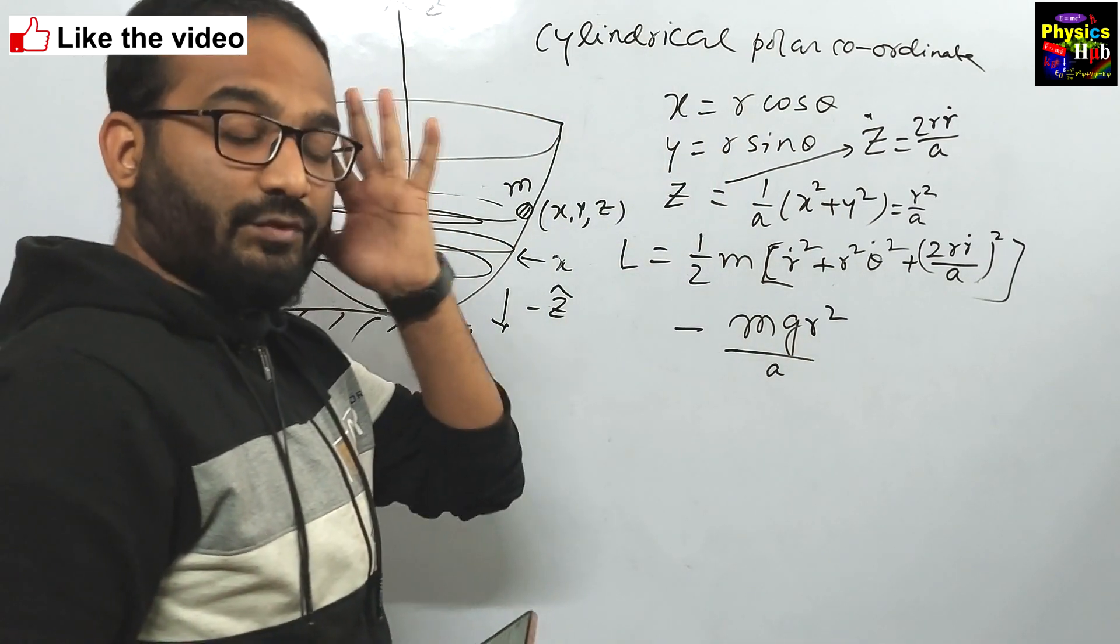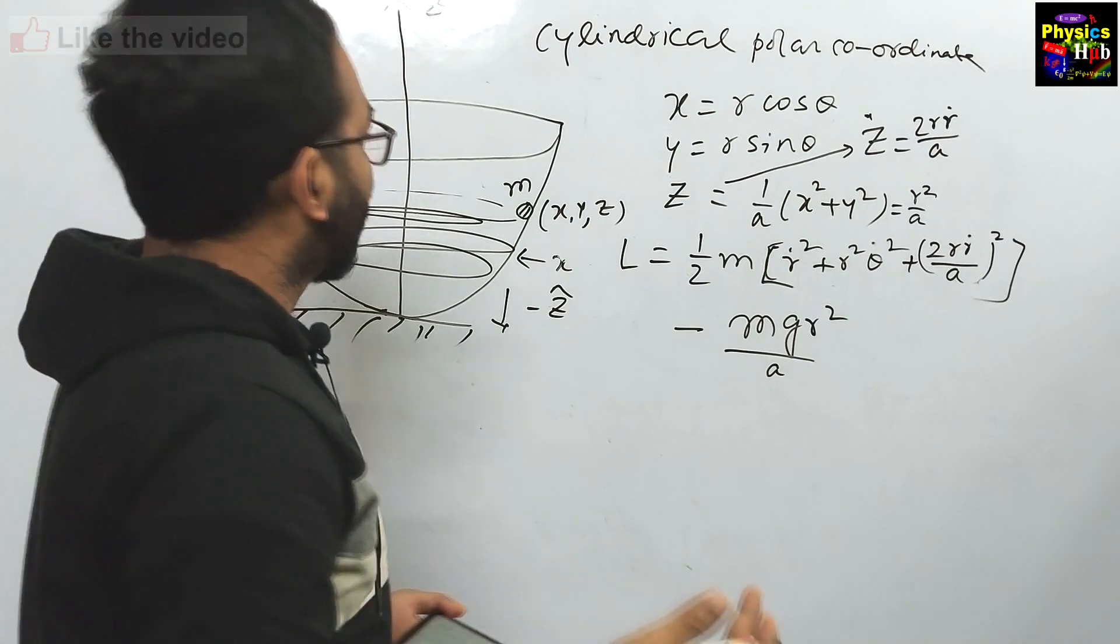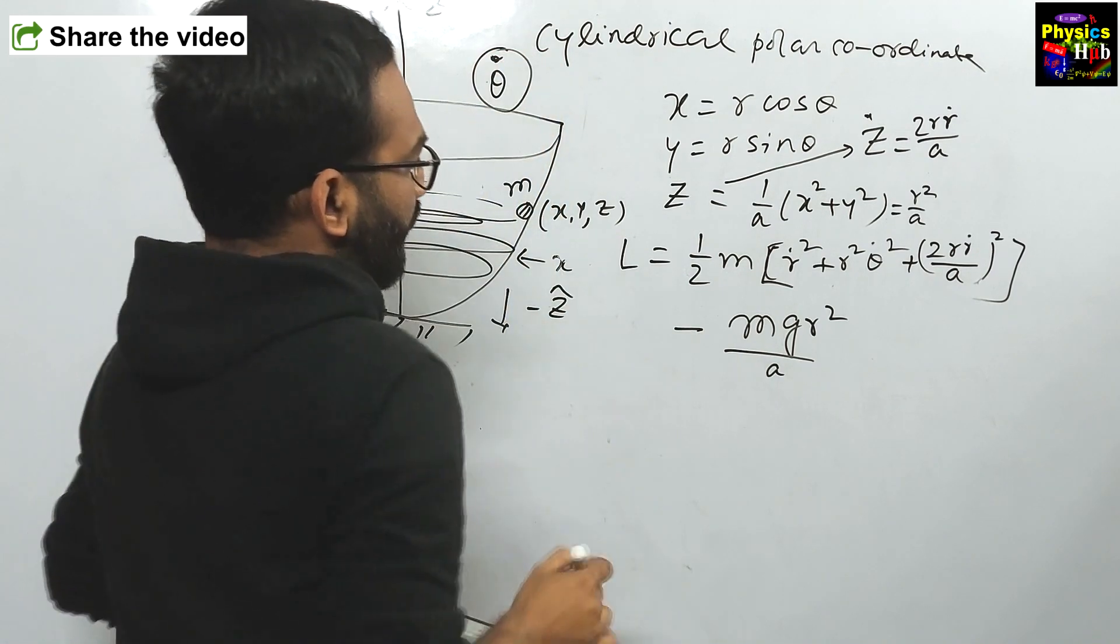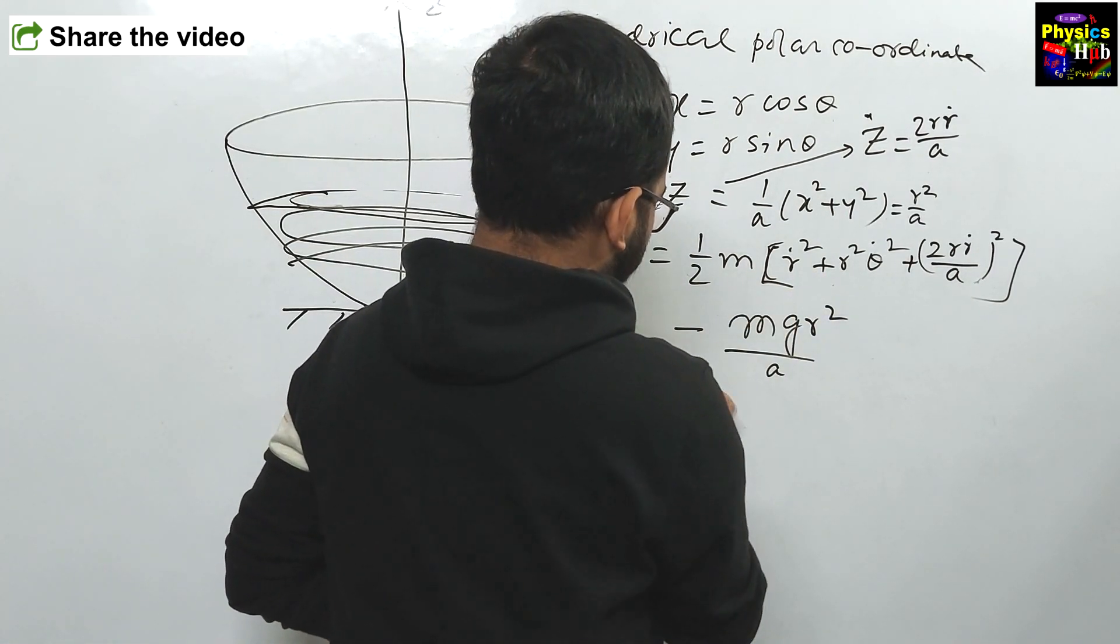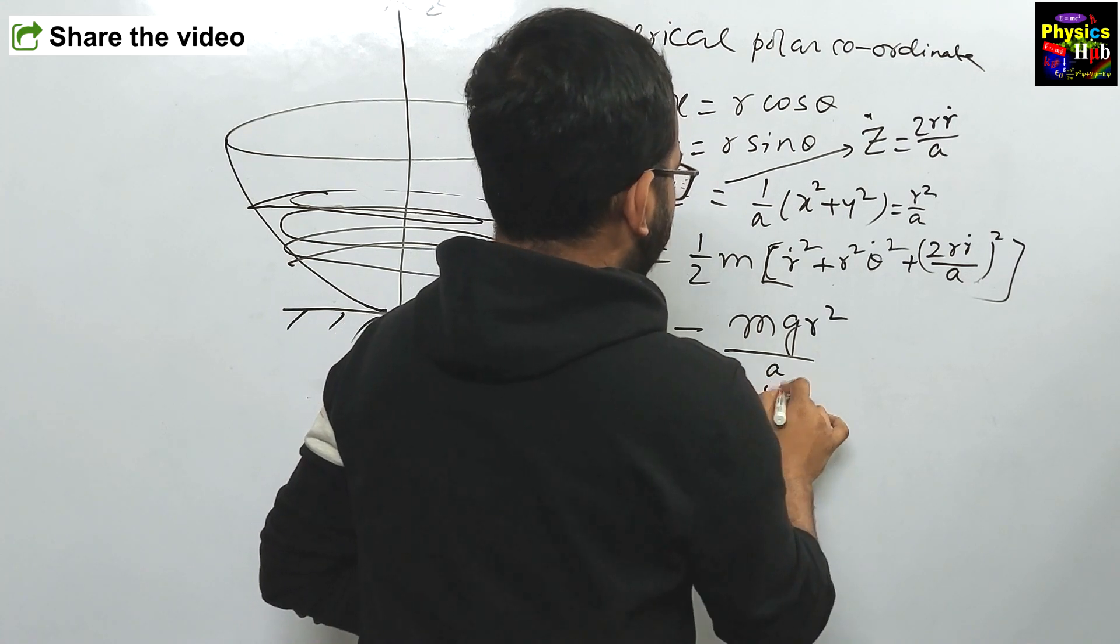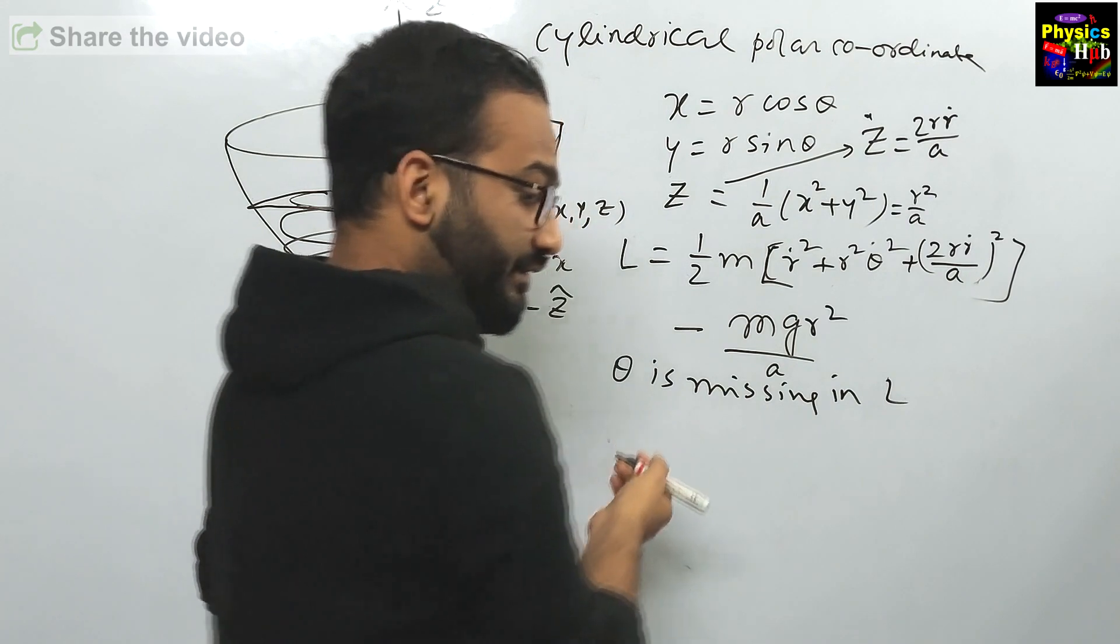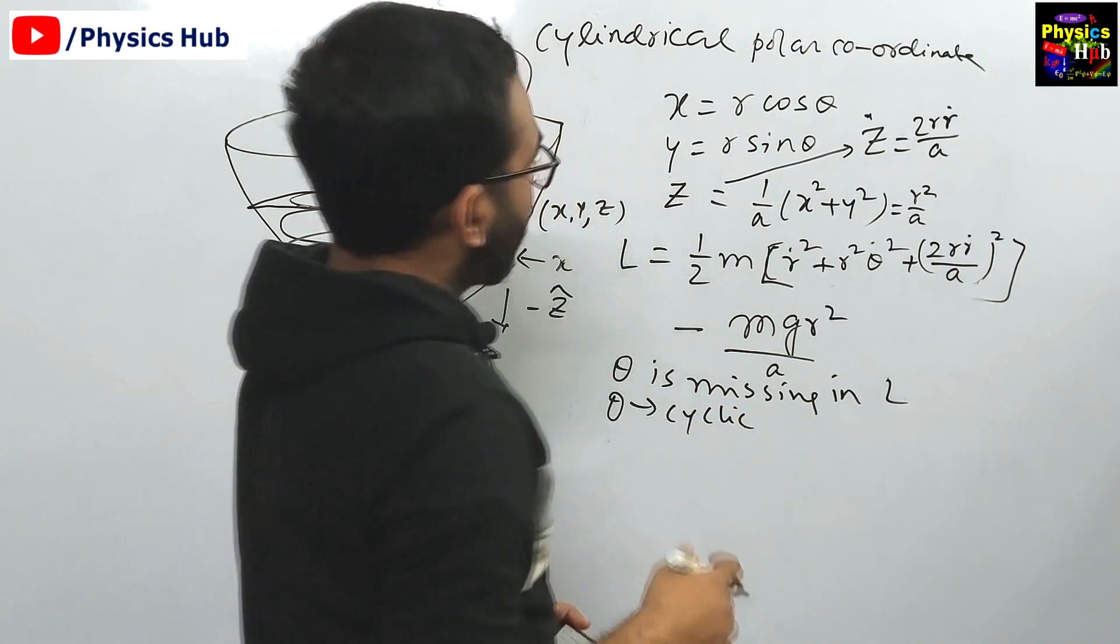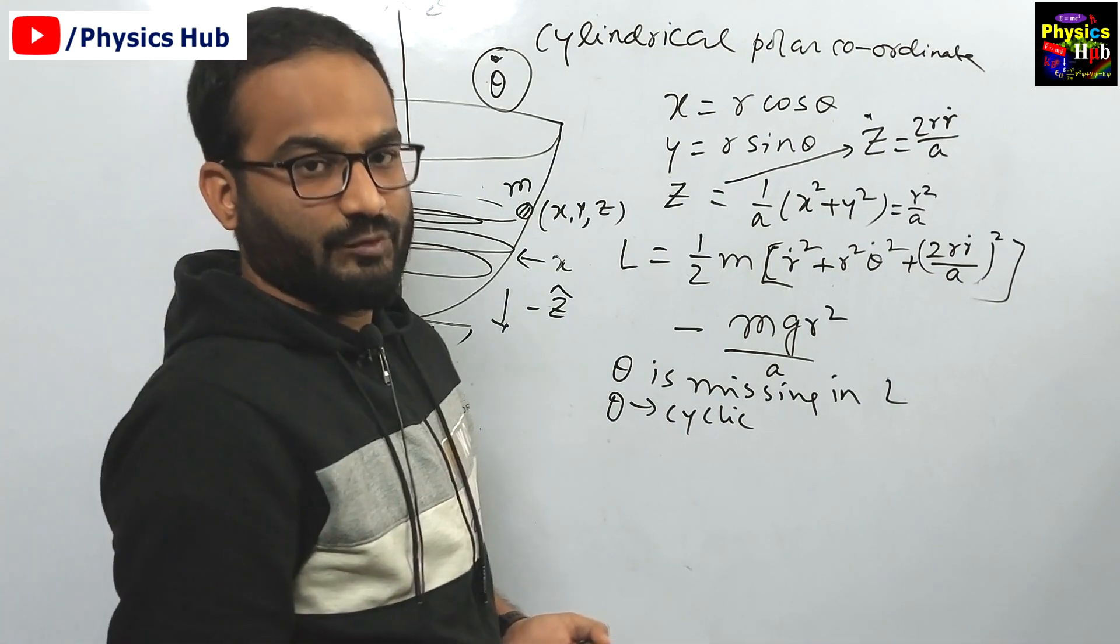Now, you have to find out the angular speed. Angular speed basically theta dot. You can see one thing here. In the Lagrangian, theta is missing. What does it mean? It means theta is a cyclic coordinate. And when a coordinate is cyclic, you know the corresponding momentum, conjugate momentum is conserved.